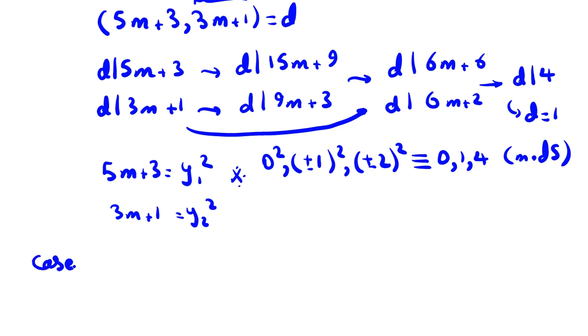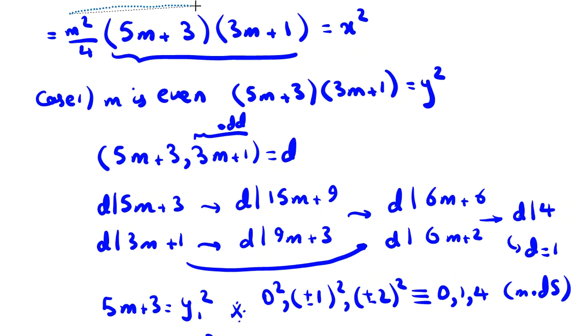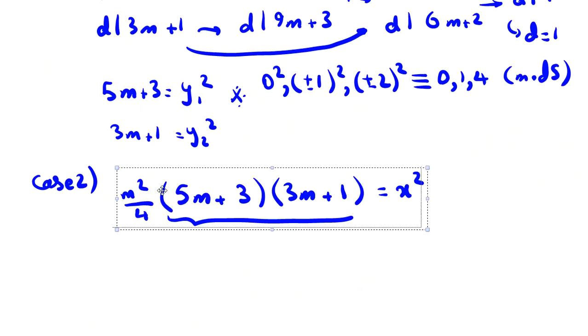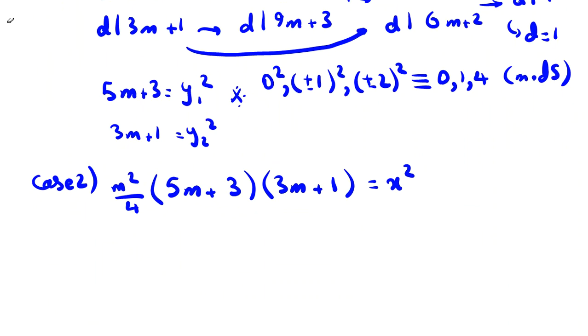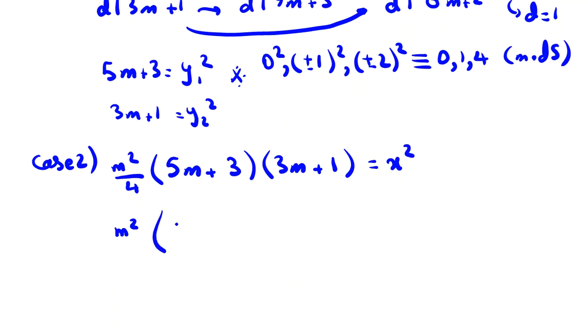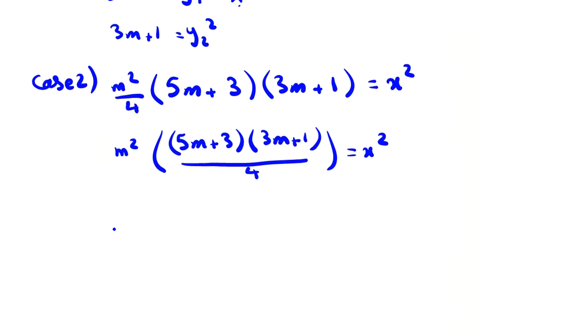Case 2: we consider m is odd. m² is a perfect square. (5m+3)(3m+1) - both are odd odd, so both are even. So over 4 is x². This part is even. So let me consider m = 2k+1.